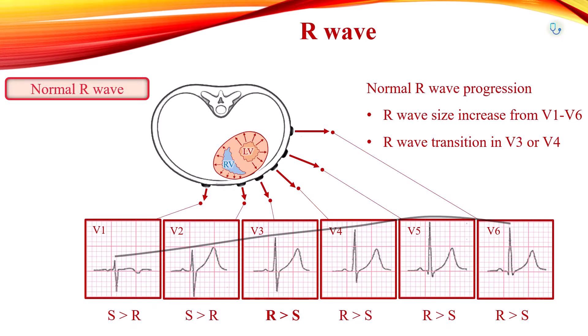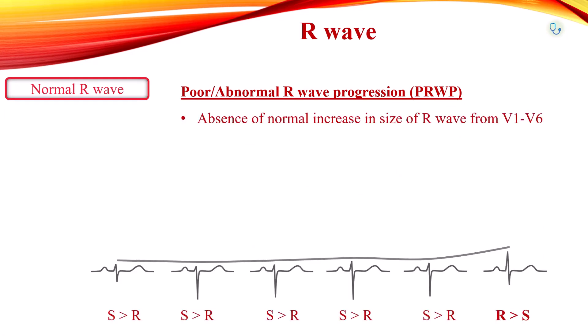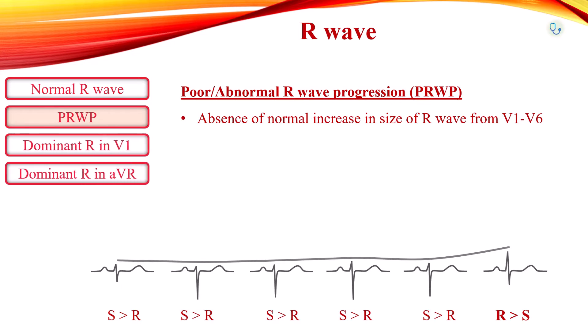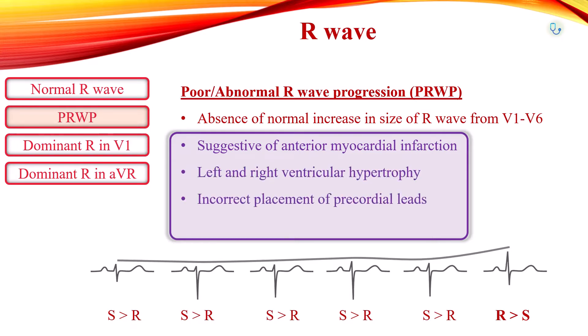Poor R-wave progression refers to the absence of the normal increase in size of the R-wave in the precordial leads from V1 to V6. Common R-wave abnormalities are poor R-wave progression, dominant R-wave in V1, and dominant R-wave in lead AVR. Poor R-wave progression is classically suggestive of anterior myocardial infarction, although it may also occur in right or left ventricular hypertrophy, incorrect placement of precordial leads, and in apparently normal individuals if the rest of the EKG is normal.